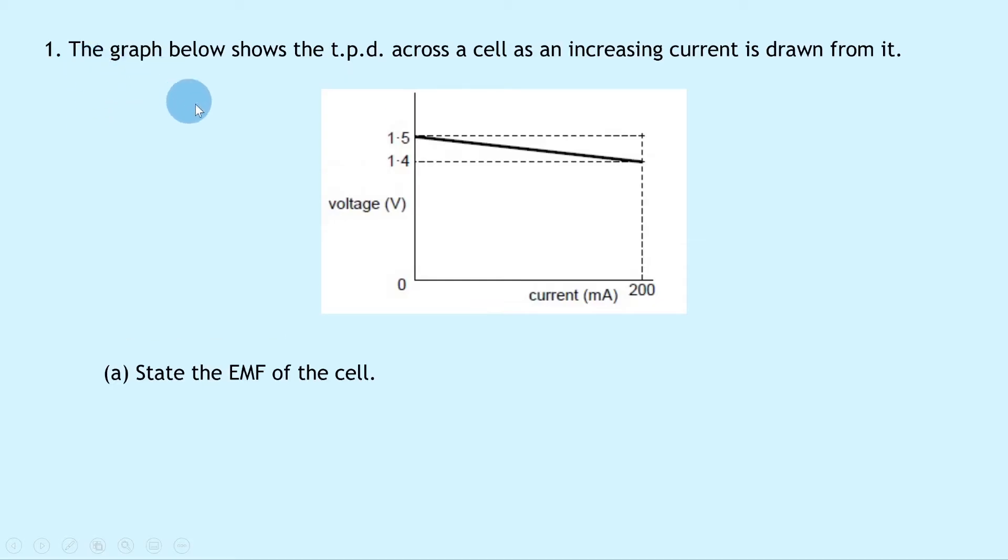So let's get going. Question one says that the graph below shows the terminal potential difference across a cell as an increase in current is drawn from it. So we've got voltage V against current in milliamps.